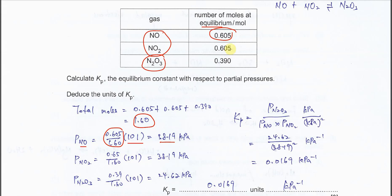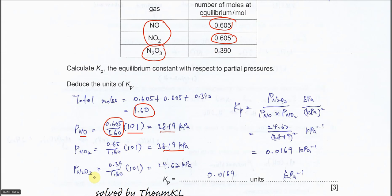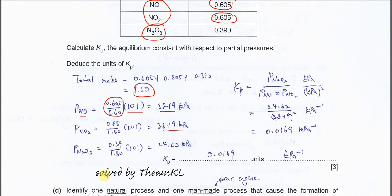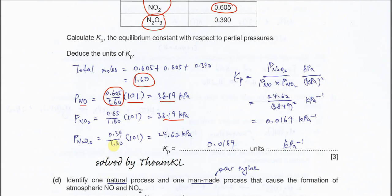Because NO2 has the same mole as NO, the number of moles is the same. Therefore, the partial pressure of NO2 will be the same, 38.19. For N2O3, you calculate its mole fraction, 0.39 over total mole times the same total pressure. You get 24.62 kilopascals.